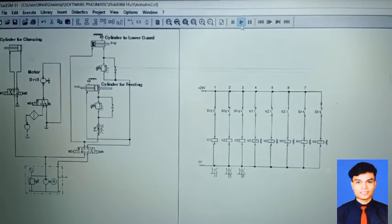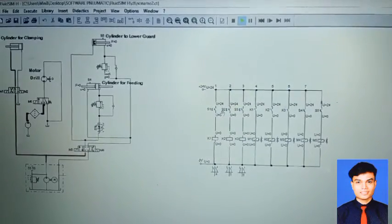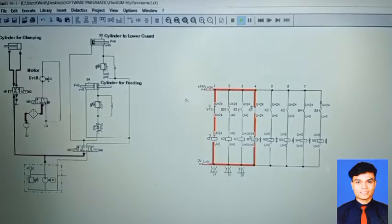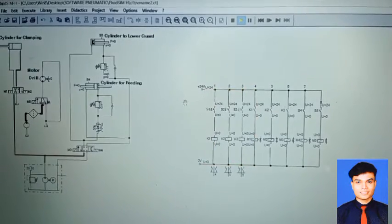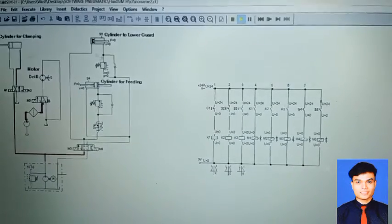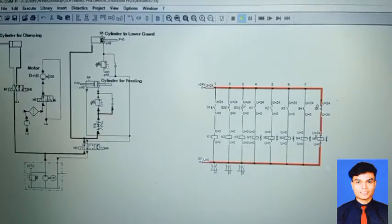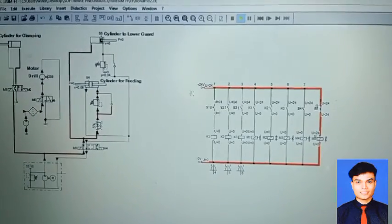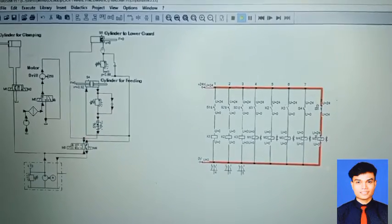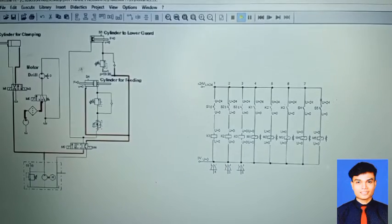Then, we run the simulation. Okay. Turn on the S1. The work piece will be clamped by the cylinder. Then, to use this system, turn on S3. The cylinder for the lower guide will be activated until reach to the sensor that are already setting. The sensor will activate the motor drill.